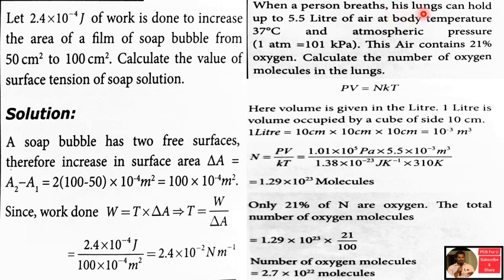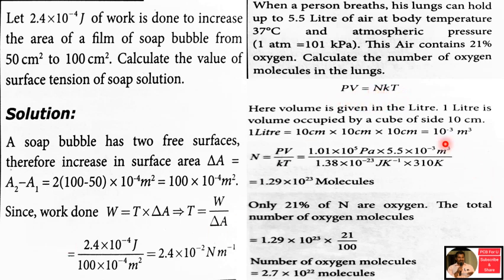A person can hold up to 5.5 litres of air at body temperature 37 degrees Celsius. This air contains 21% oxygen. To find the number of oxygen molecules, we use the ideal gas relation P equals NkT, where P is atmospheric pressure.